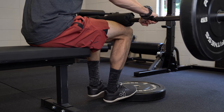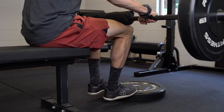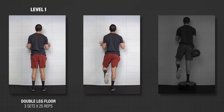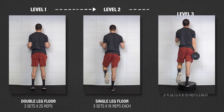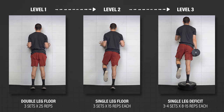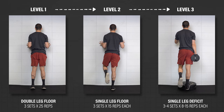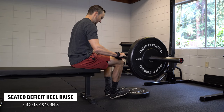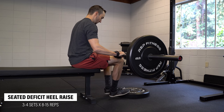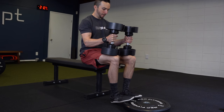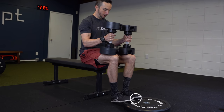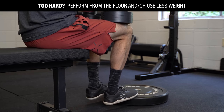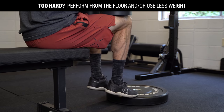For calf-specific strength, here are two options. First, a knee straight progression: start with double leg heel raises from the floor, then progress to single leg, and finally increase the range of motion by performing a deficit single leg heel raise. Add weight over time to make these harder. The second calf option is a knee bent variation — I personally like the seated deficit heel raise. Use a barbell, dumbbells, or another weight. Start with your toes on an object about two to four inches high and place the weight on top of your knees. You can perform these on the ground or use less weight to make it easier, but the deficit is a good goal to build up to.